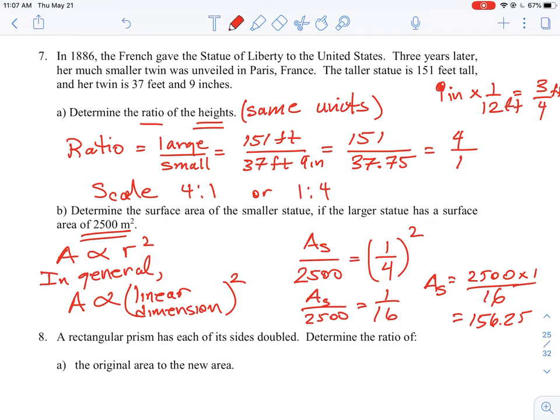Now they could have asked you another question. They could have asked you what is the volume. Volume is proportional to the linear dimension as the cube of that number. So if instead of area, if that was volume, to solve for volume you would have to cube one quarter rather than square it.